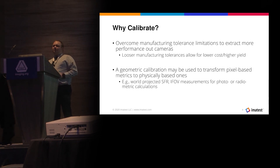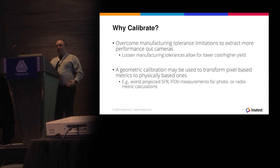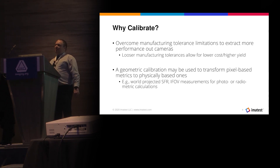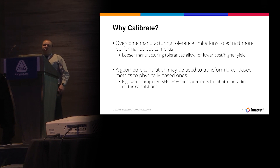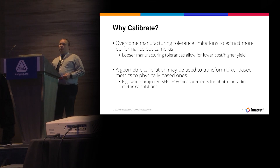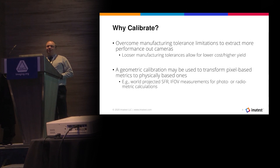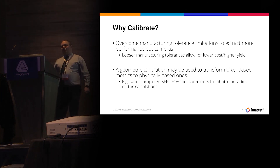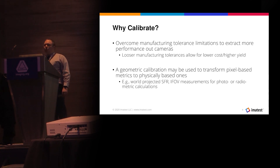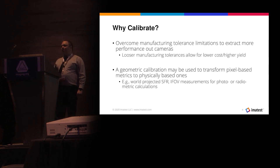To overcome the manufacturing tolerance limitations and extract more performance out of your camera. Looser manufacturing tolerances allow for lower cost, higher yield, but less uniformity amongst all the cameras that you're producing. A geometric calibration may be used to transform pixel-based metrics into physically-based ones, such as a world projected spatial frequency response or an instantaneous field of view per pixel if you are doing radiometric calculations at the pixel level of your sensor.